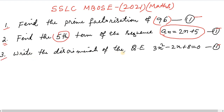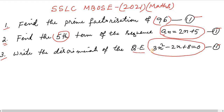Question number 3: Write the discriminant of the quadratic equation 3x squared minus 2x plus 8 equals 0. This is the quadratic equation, and we need to find its discriminant.